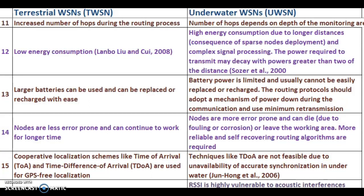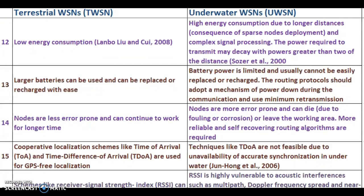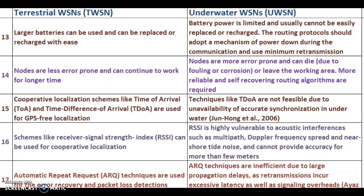Point 14: In TWSN, nodes are less error prone and can continue to work for a longer time. In UWSN, nodes are more error prone and can die or leave the working area, so more reliable and self-recovering routing algorithms are required. Point 15: In TWSN, cooperative localization schemes like Time of Arrival (TOA) and Time Difference of Arrival (TDOA) are used for GPS-free localization. In UWSN, techniques like TOA are not feasible due to the unavailability of accurate synchronization underwater.